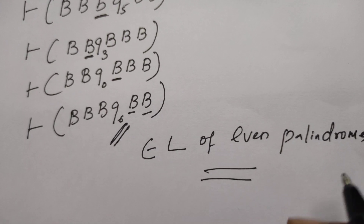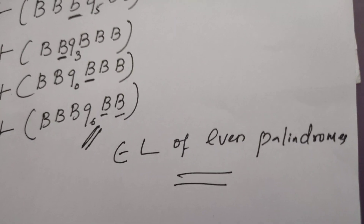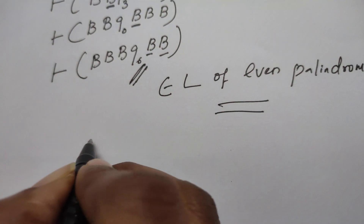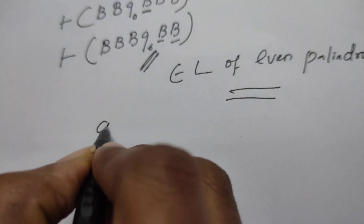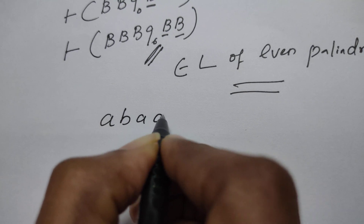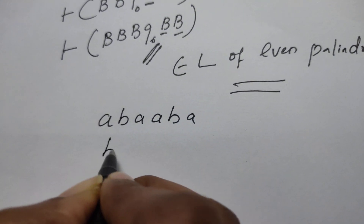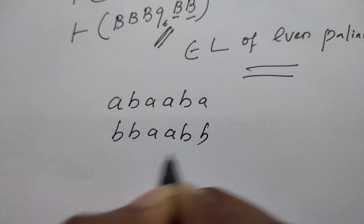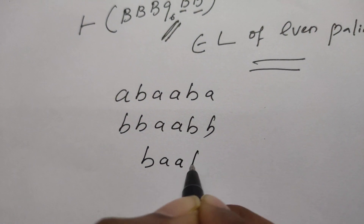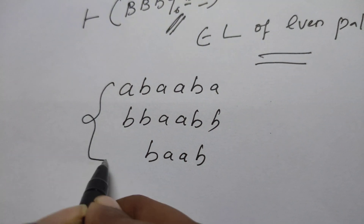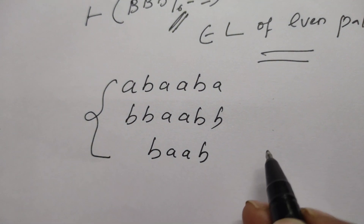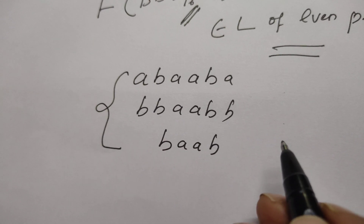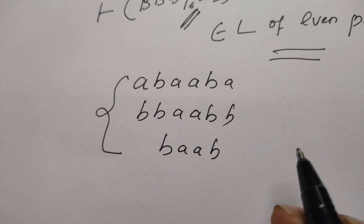This is a straightforward problem. You can also try other even palindrome strings such as abba, abbaabba, or bbaabb using this transition diagram. Please try those strings and leave a comment in the comment section.